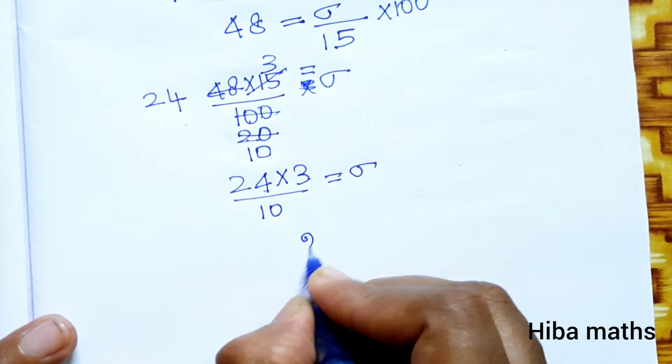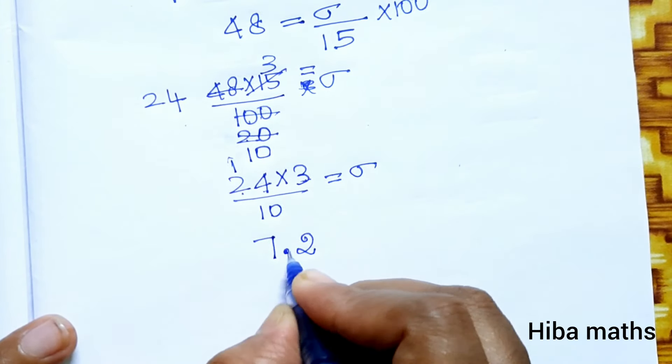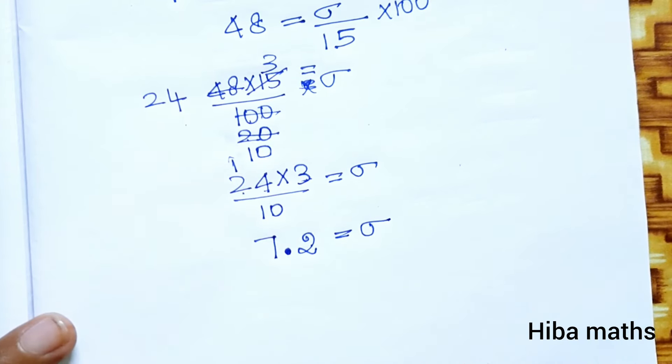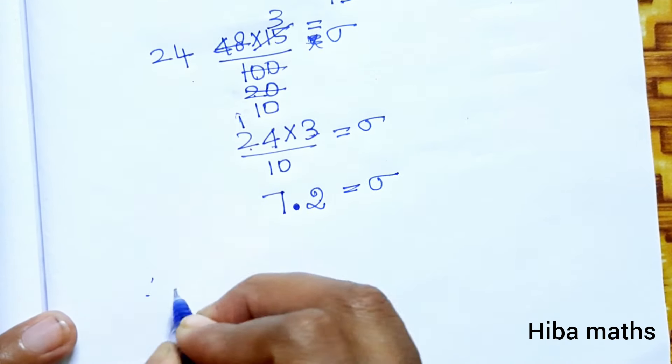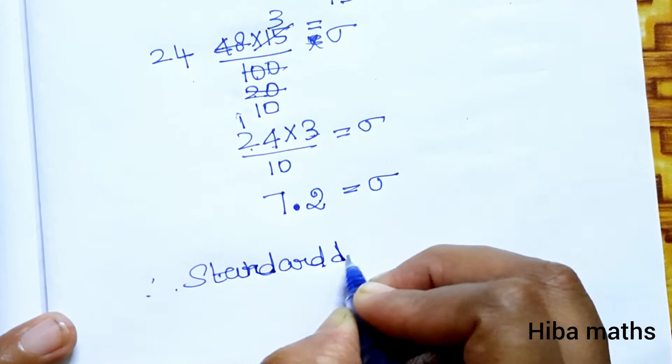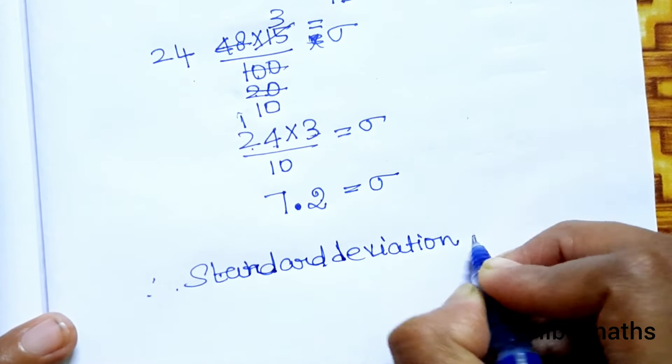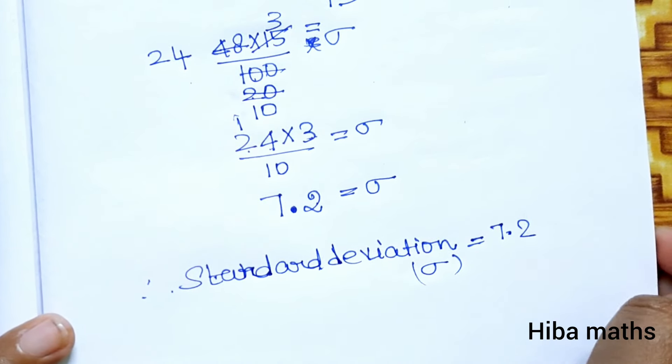4 × 3 = 12, carry 2. 2 × 3 = 6 plus 1 = 7. Divided by 10, one decimal place. That equals 7.2. Therefore, standard deviation equals 7.2. Thank you so much for watching.